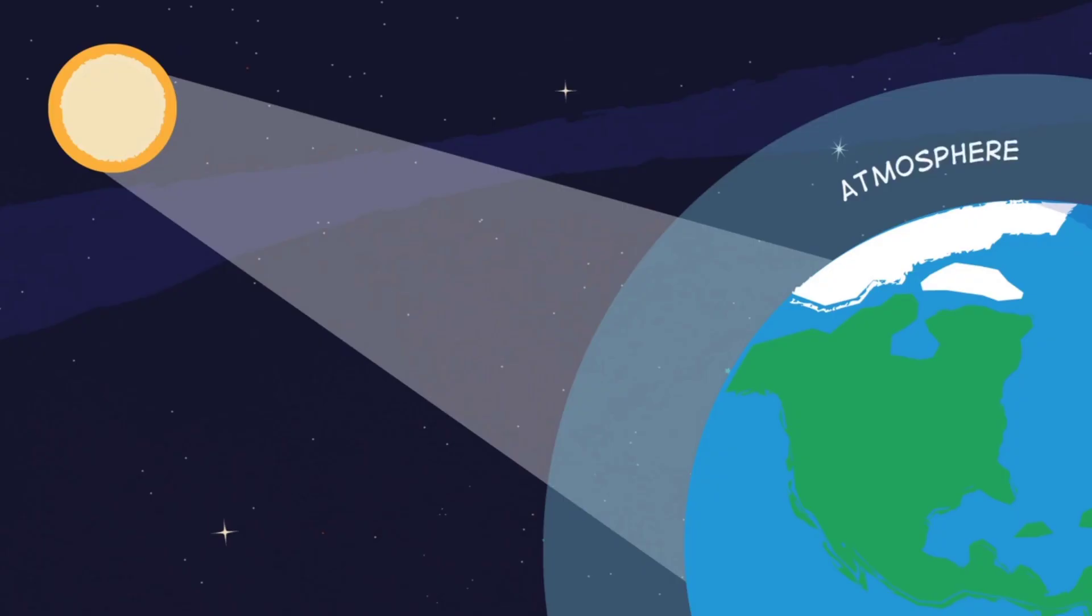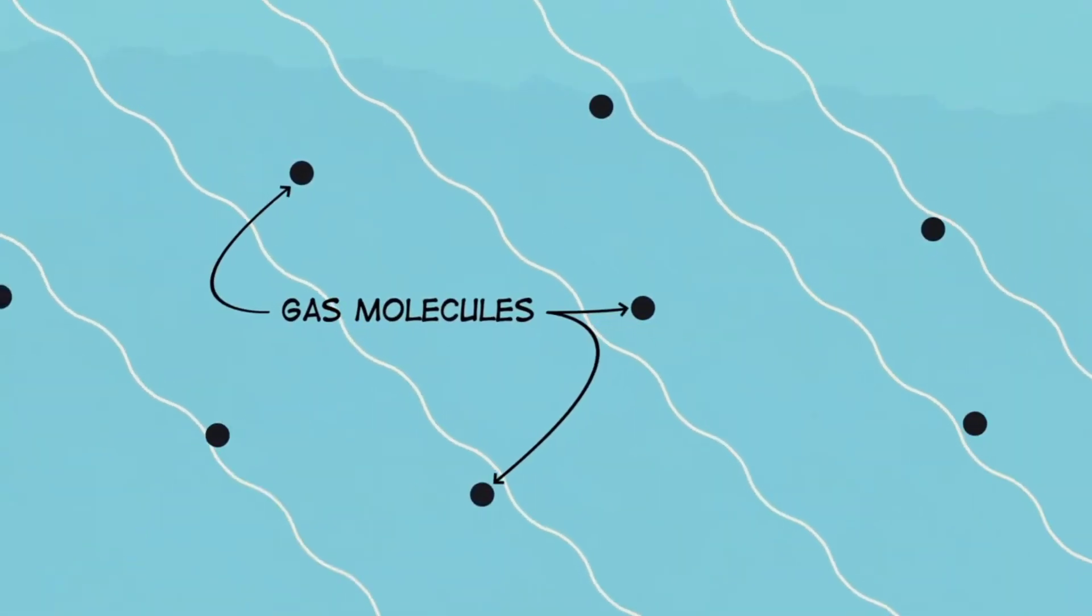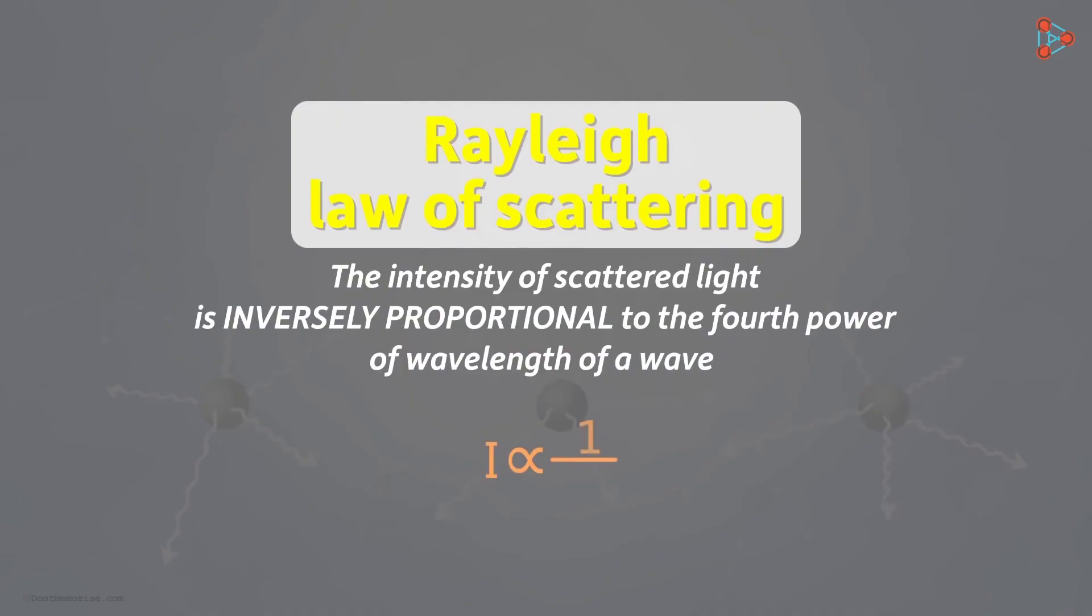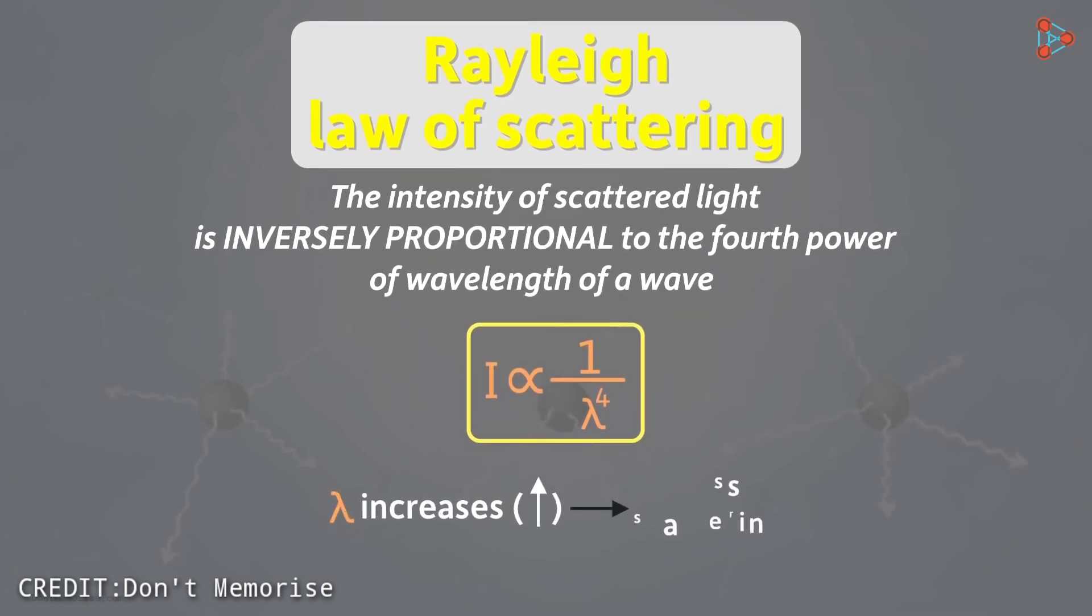All of this light is scattered in the upper atmosphere by gases like nitrogen and oxygen. According to Rayleigh's law, the scattering of each color of light is inversely proportional to the fourth power of wavelength corresponding to the light, or simply: shorter the wavelength, more is the scattering.